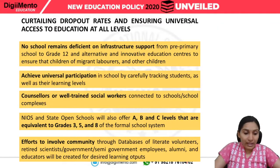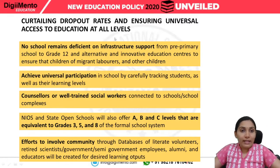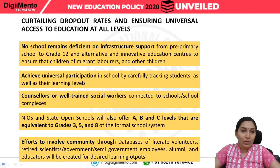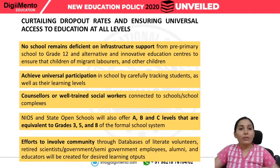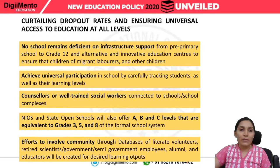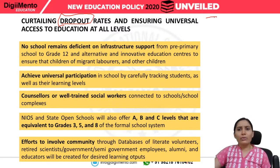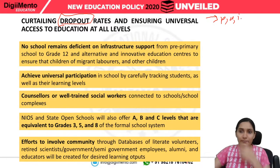The next very important objective is curtailing the dropout rates and ensuring universal access to education at all levels. Dropout means students discontinuing in between the educational process. This can be due to many reasons — poverty, lack of income, or the school being very far away.